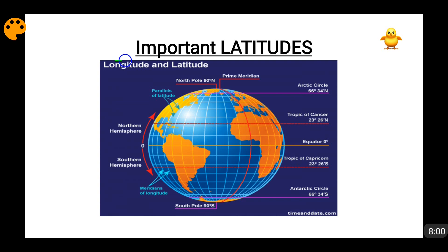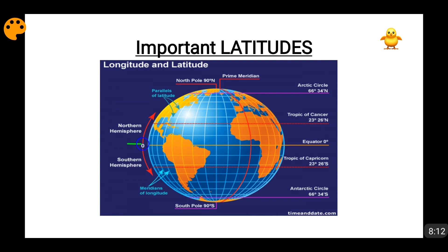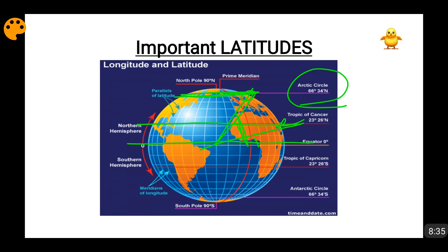Now the important latitudes. In between, we have the equator. As we move north, this is north latitude; as we move south, this is south latitude. Comparing with respect to the equator: this is the Tropic of Cancer at 23 degrees 26 minutes. If you connect this point to the center of the earth, the angle will be 23 degrees 26 minutes. Similarly, this is the Arctic Circle — connecting this point to the center of the earth, the angle will be 66 degrees 34 minutes. These are important latitudes.